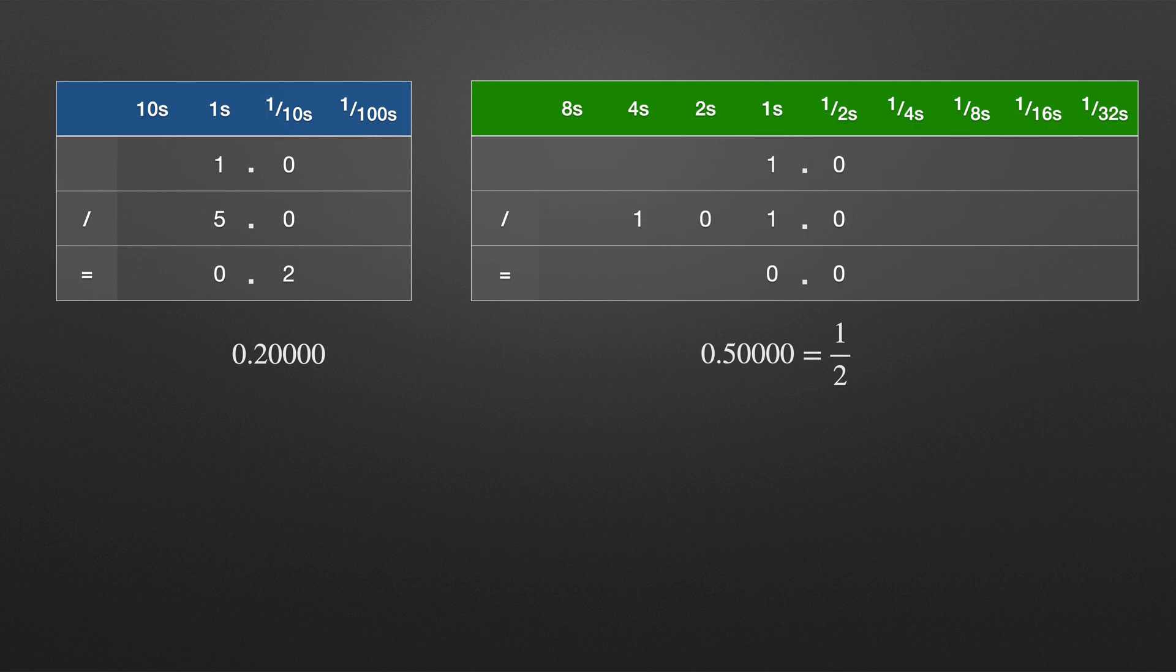oh that's more than 0.2 so there's no halves here. Quarters, or 0.25, still too high so no quarters. Eighths, 0.125, ah well we can take that off so with one eighth taken care of we're left with 0.075.